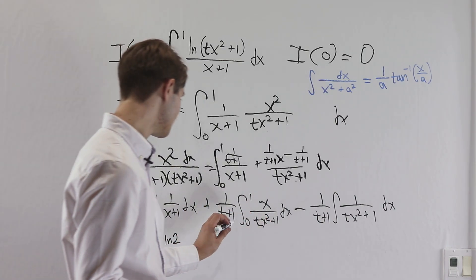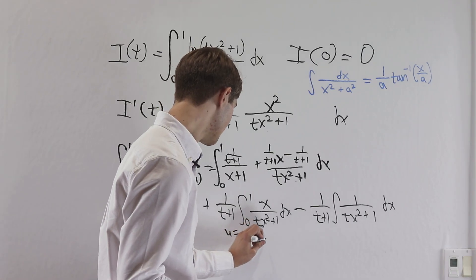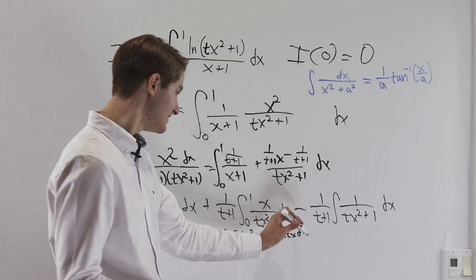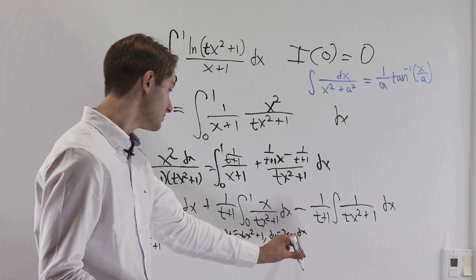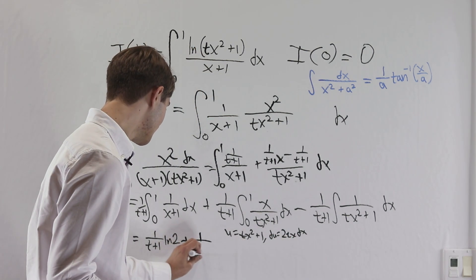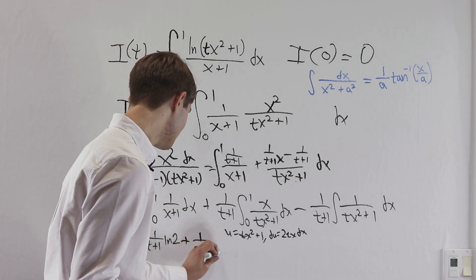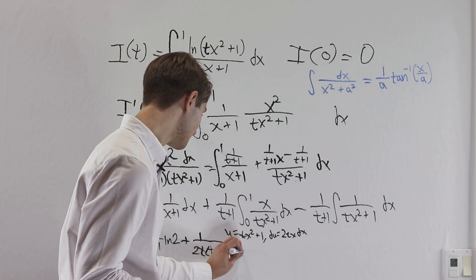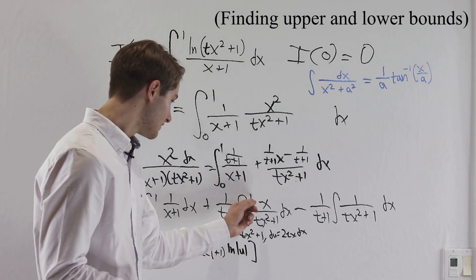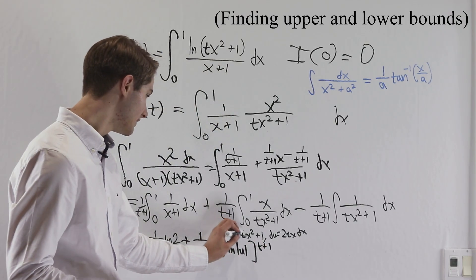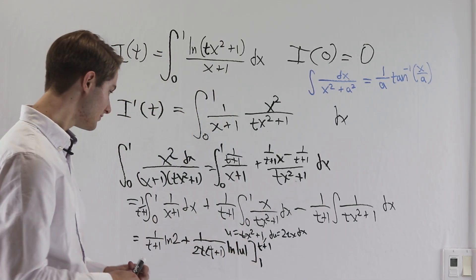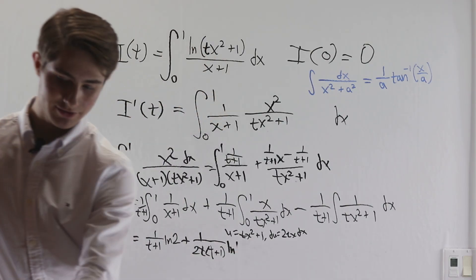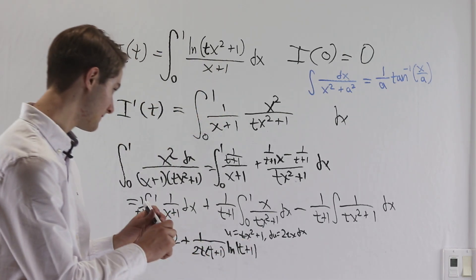For the second integral, we do a basic substitution: let u equal t x squared plus 1, then du equals 2tx dx. So x dx is du divided by 2t, giving another 2t in the denominator times t plus 1. The integral of 1 over u du is the natural log of the absolute value of u. Evaluating: t times 1 squared plus 1 gives t plus 1, and at 0 we get 1, so the natural log of 1 is 0. We're left with 1 over 2t(t plus 1) times the natural log of the absolute value of t plus 1.